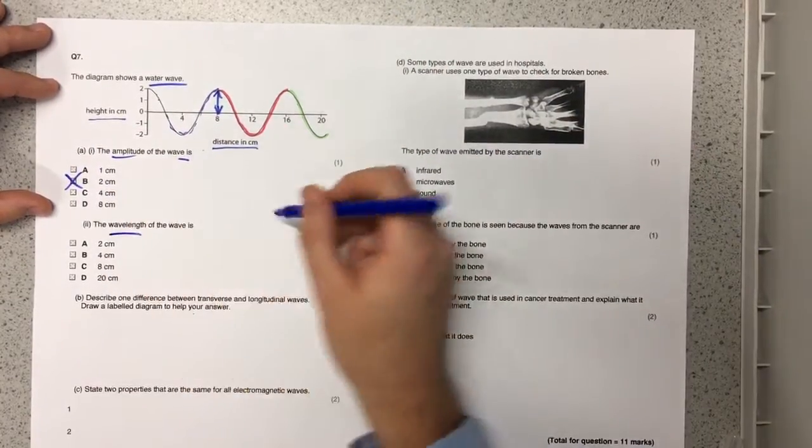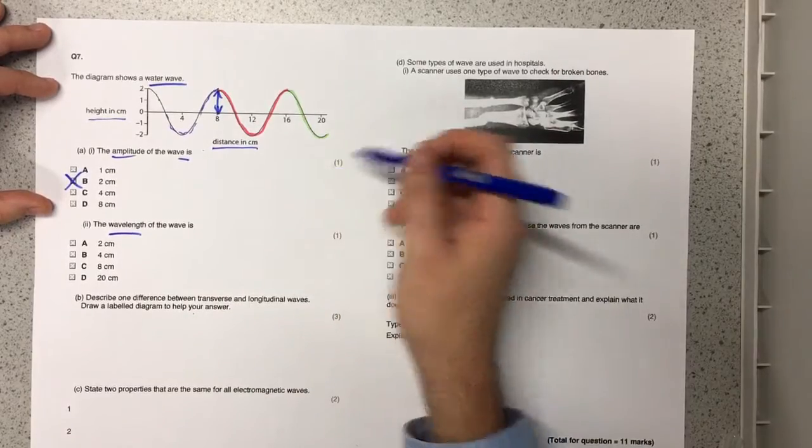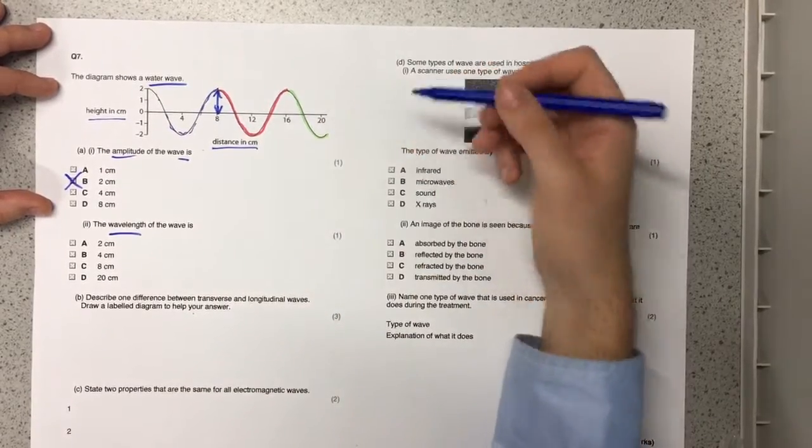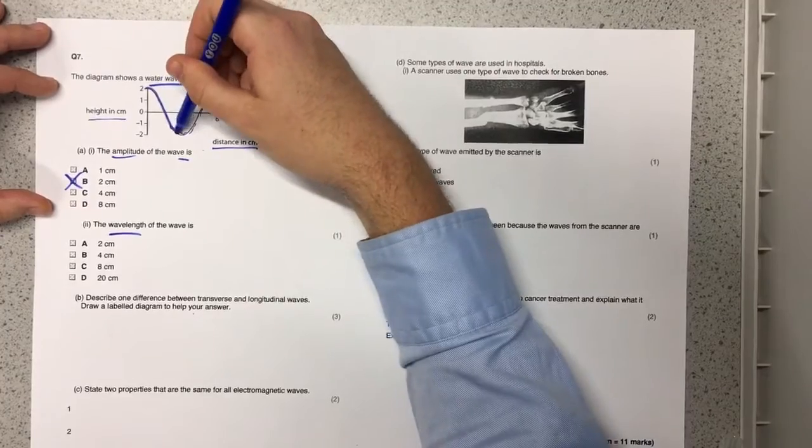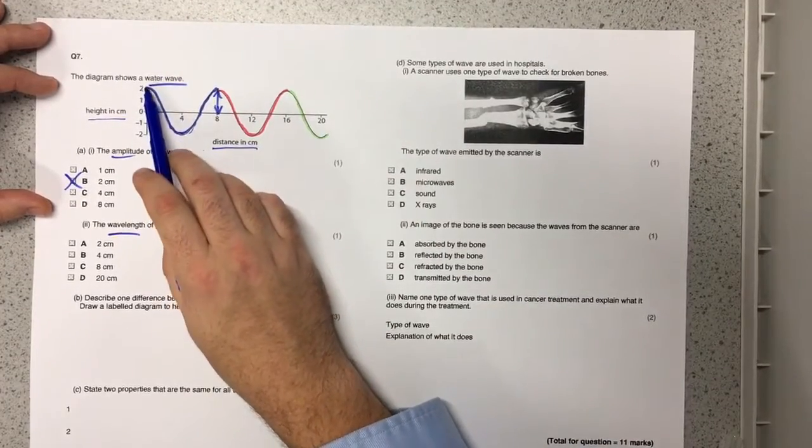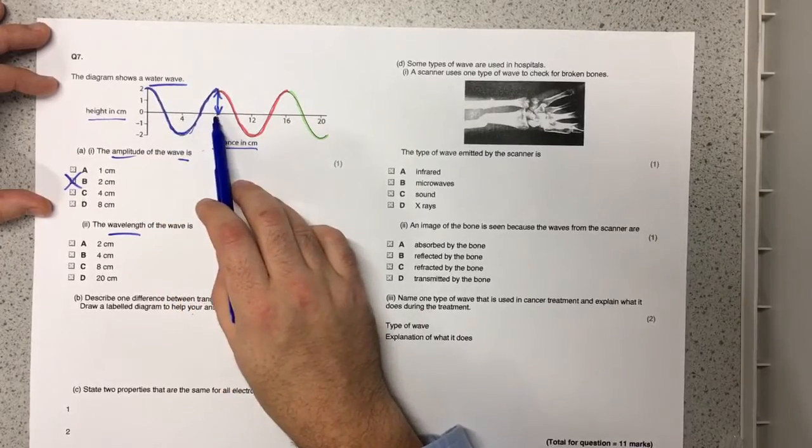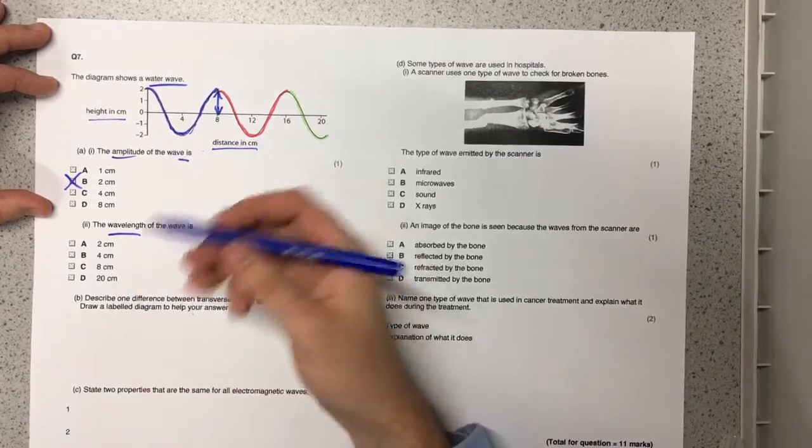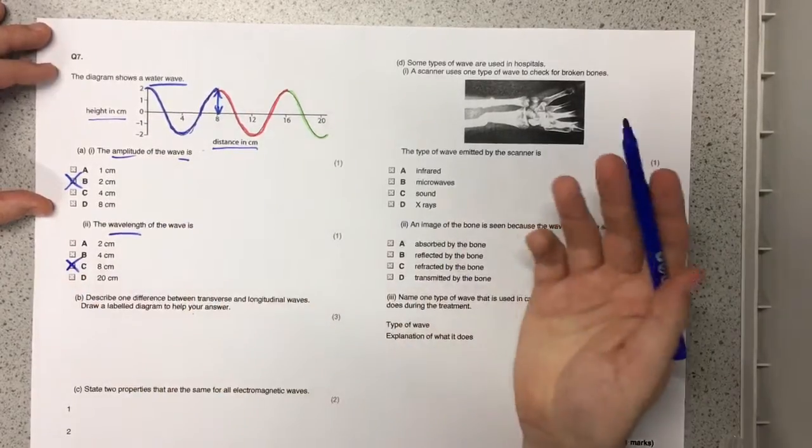And then it asks us the wavelength of the wave is. This is why it's so important you're able to identify what one wave looks like. And so we can see the wave starts here at zero and goes all the way to eight. So our wavelength is C, eight centimeters.